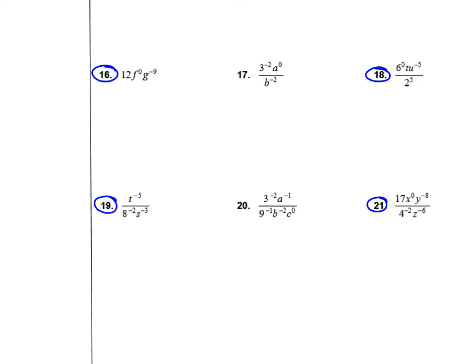On these exercises, it's helpful to split them into smaller pieces. On number 16, there's a 12. So 12 times f to the 0 power, where f to the 0 power is 1. Since there's a negative exponent on g, that sends g to the bottom 9 times — so we'd divide by g 9 times. We get 12 over g to the 9th.